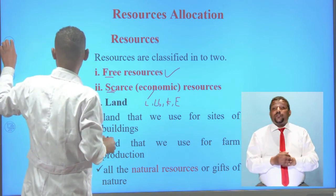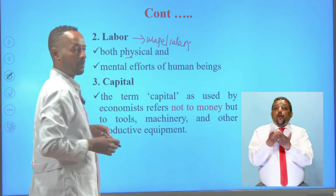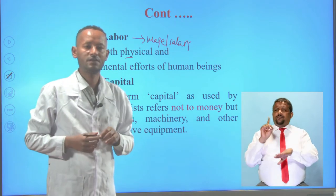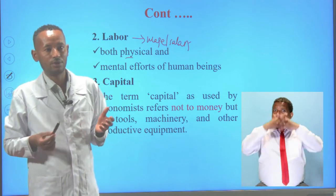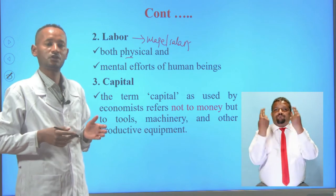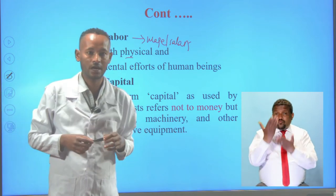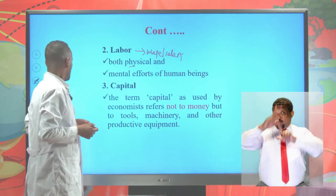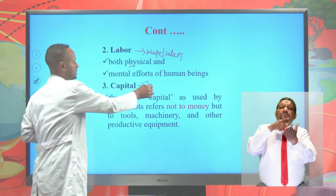The third economic resource is capital. When we say capital in economics, we are not referring to financial capital. Rather, the machineries, buildings, and equipment that are used for the production of final goods and services are considered as capital in economics. The reward for the economic resource capital is interest.